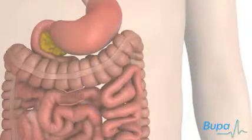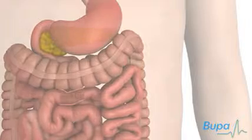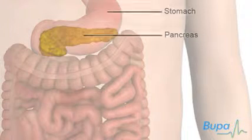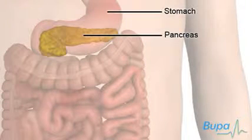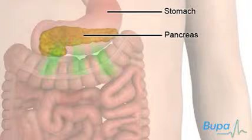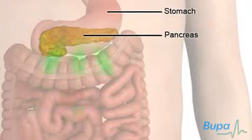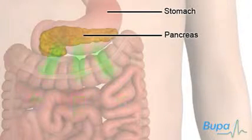The amount of glucose in your blood is controlled by a hormone called insulin. Insulin is secreted into the blood by the pancreas, which is found behind the stomach.